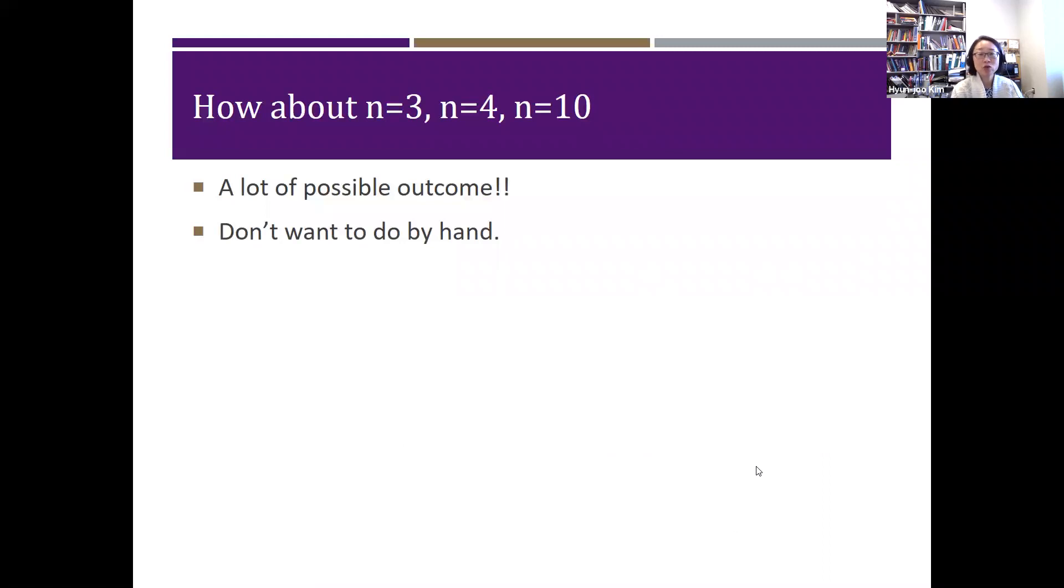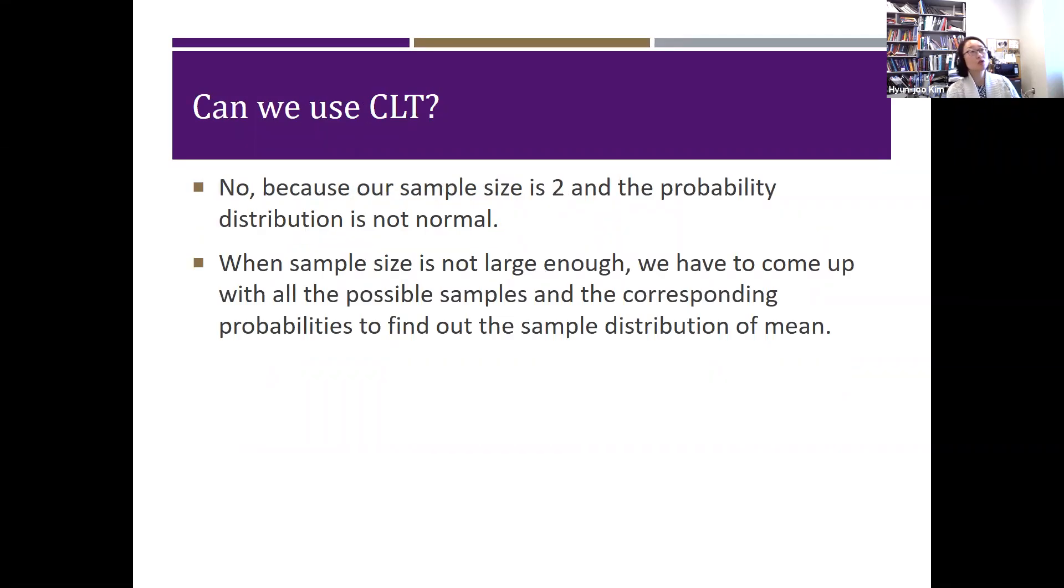Okay, so that was the n is equal to 2 case. Can we do the same thing for n is equal to 3, or n is equal to 4, n is equal to 10? Presumably we can. When n is equal to 3, you will have 3 times 3 times 3 different cases, which is 27 cases. When n is equal to 4, you're going to have 3 times 3 times 3 times 3, which is 81 different cases. It is doable, but when n is even bigger than that, it gets really, really, really big. So we know the idea of it, but we don't usually do it by hand because it's a tedious process.